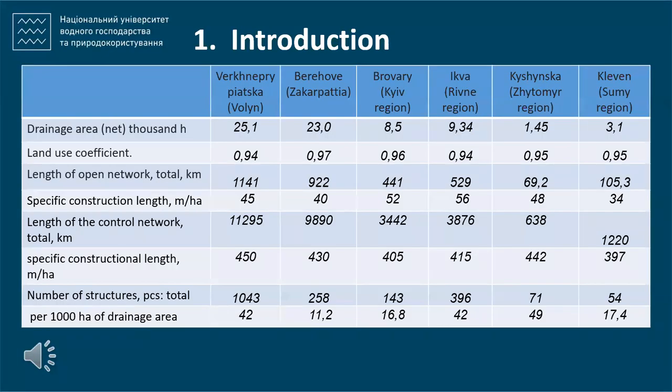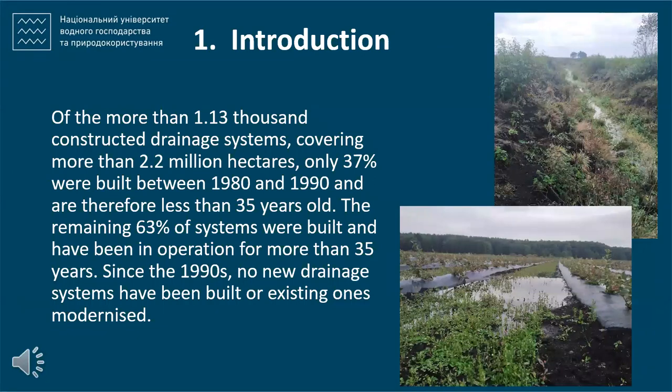The current state of water management systems in the humid zone requires new effective approaches to both construction and reconstruction, as well as to design of regulatory drainage networks. This slide shows the performance of the largest drainage systems in Ukraine. Of the more than 1,000 constructed drainage systems covering more than 2 million hectares,